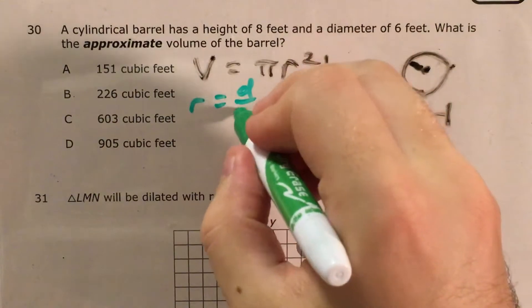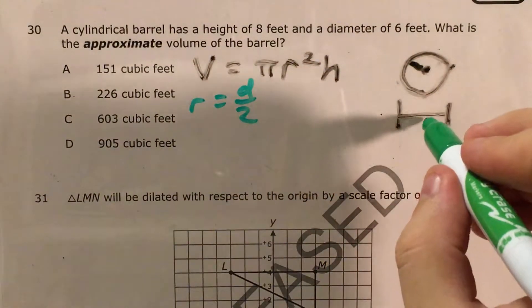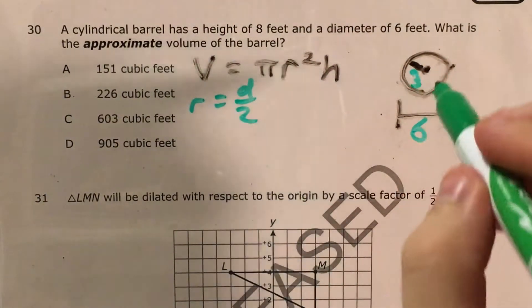So the radius equals the diameter divided by 2. Now if the diameter is 6, the radius is half of 6, which is 3.